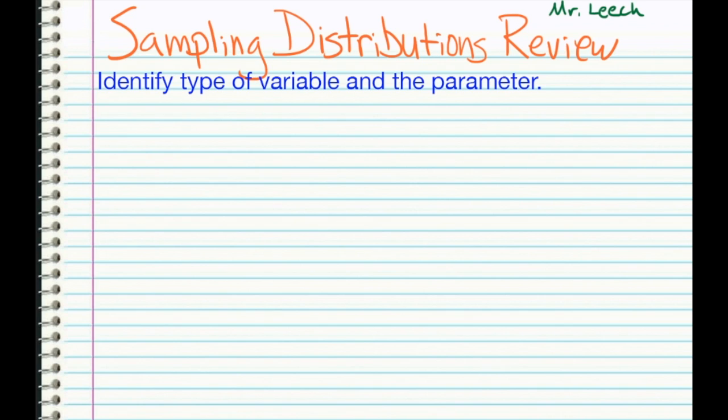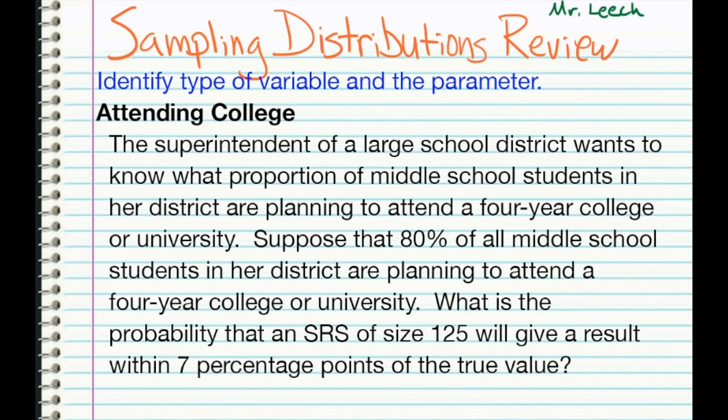Here's the first question. The superintendent of a large school district wants to know what proportion of middle school students in her district are planning to attend a four-year college or university. Suppose that 80% of all middle school students in her district are planning to attend a four-year college or university. What is the probability that an SRS of size 125 will give a result within seven percentage points of the true value? Now write down what type of variable you think this is, whether it is categorical or quantitative, and then what's the symbol for the parameter.